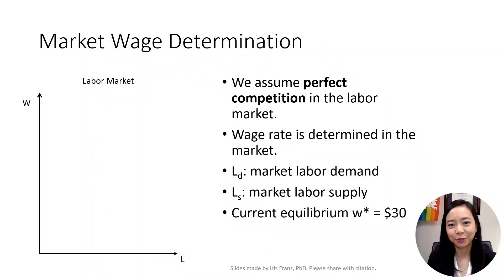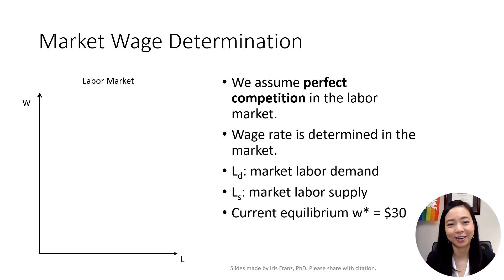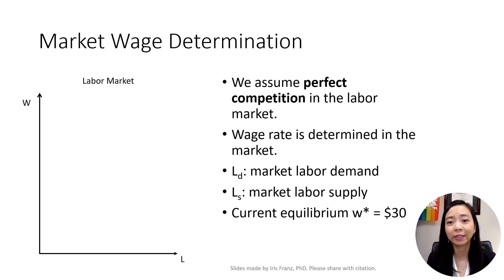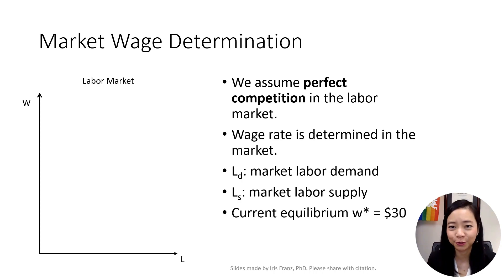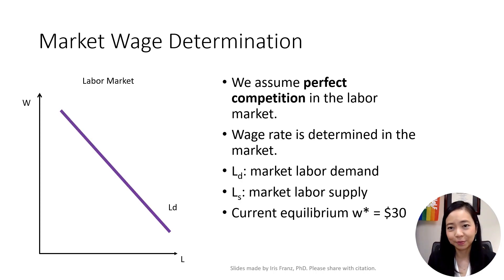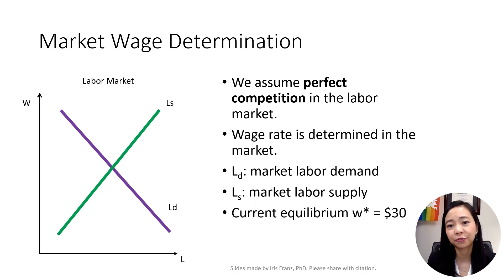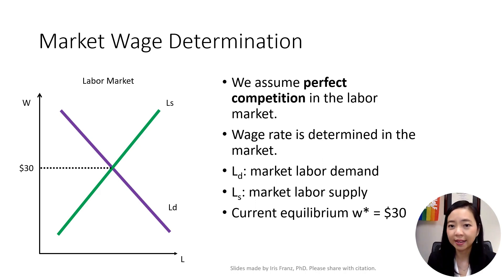Remember that we assume perfect competition in the labor market. Therefore, the equilibrium wage is determined by the market's labor demand LD and the labor supply LS. At the intersection of the labor demand and labor supply curve, we get the equilibrium wage of $30.